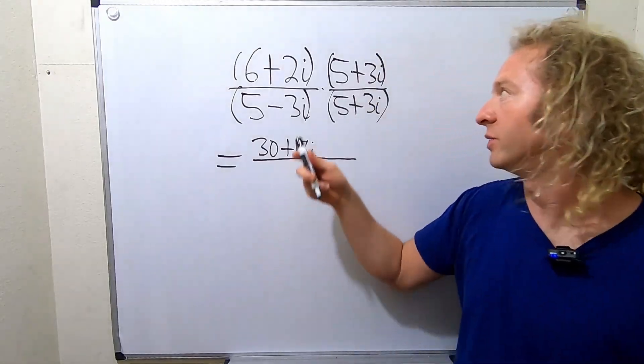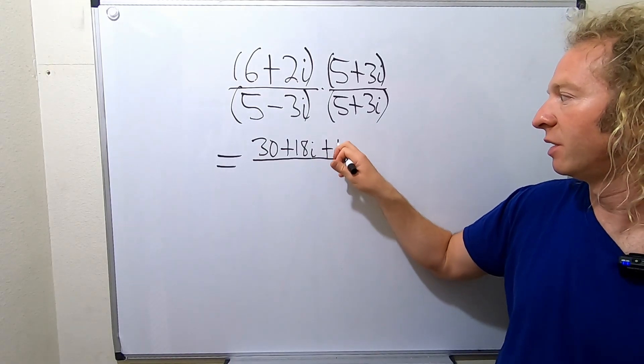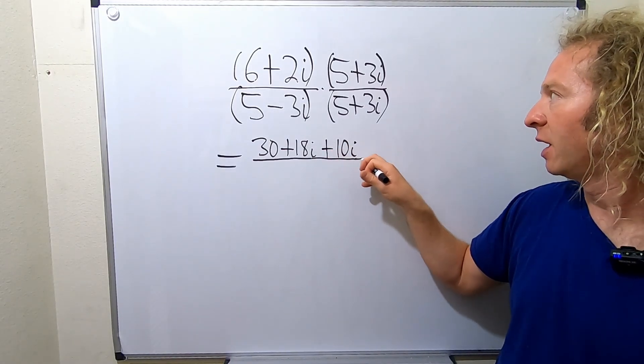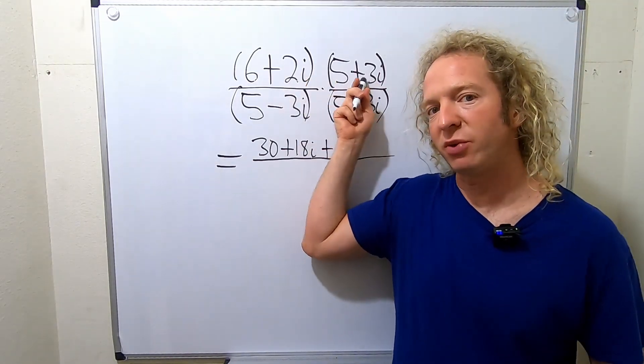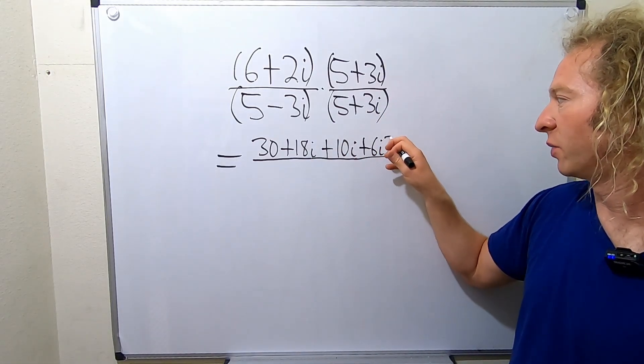Then we do the 2i. So 2i times 5, that's going to be 10i, so plus 10i. And then we do 2i times 3i. It's going to give us 6i squared.